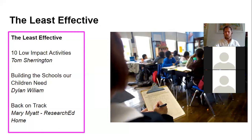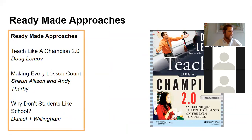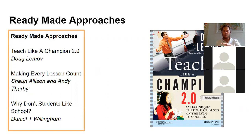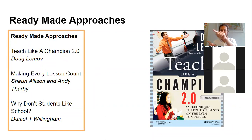On ready-made approaches — Teach Like a Champion offers quick, easy takeaway techniques. I love the technique called 'No Opt-Out,' which is all about questioning. You ask Student A a question, they say 'I don't know.' You go to Student B, who gives the correct answer — and normally you'd move on, meaning Student A has completely opted out and learned that not answering is fine. With No Opt-Out, after Student B gives the correct answer, you go back to Student A and say 'give me the correct answer then.' They often say 'what?' — because they've already opted out.